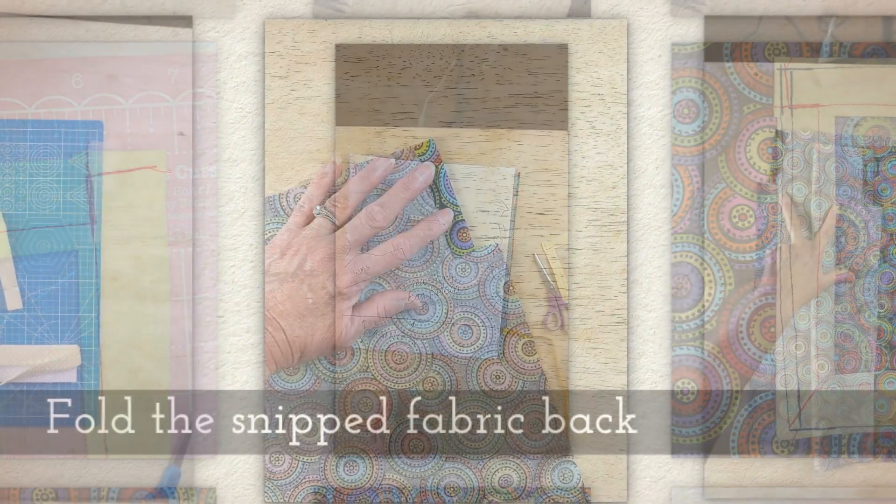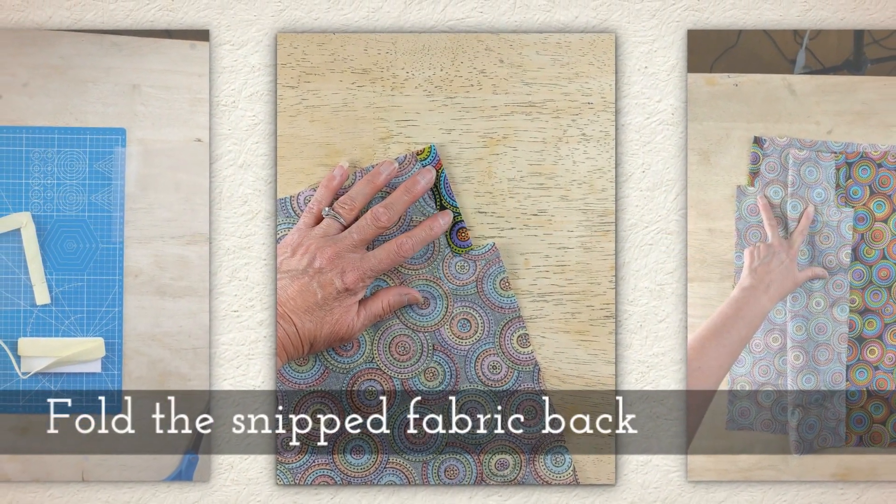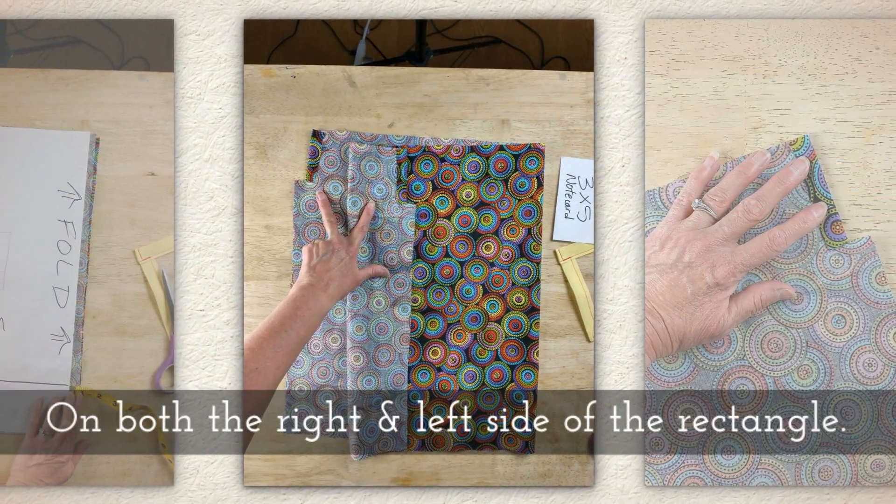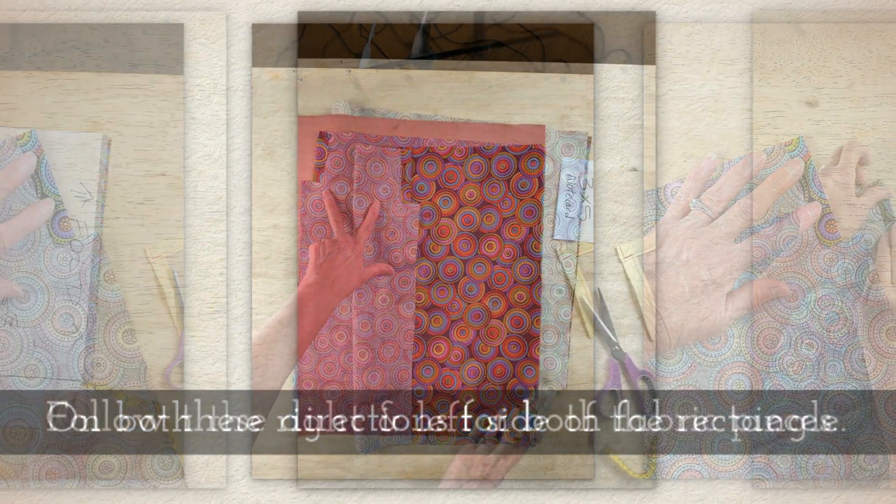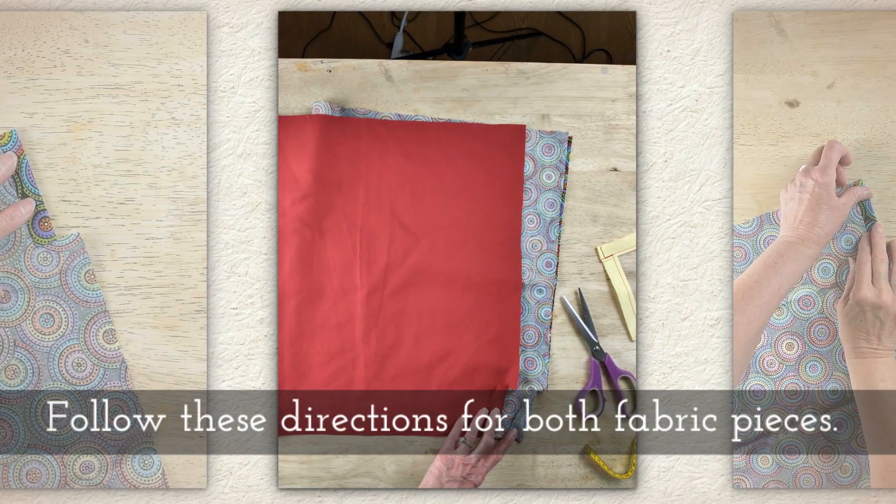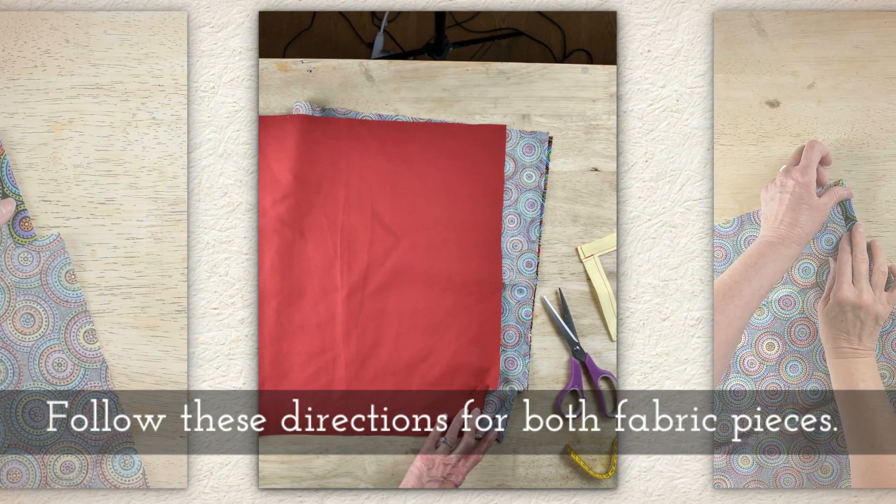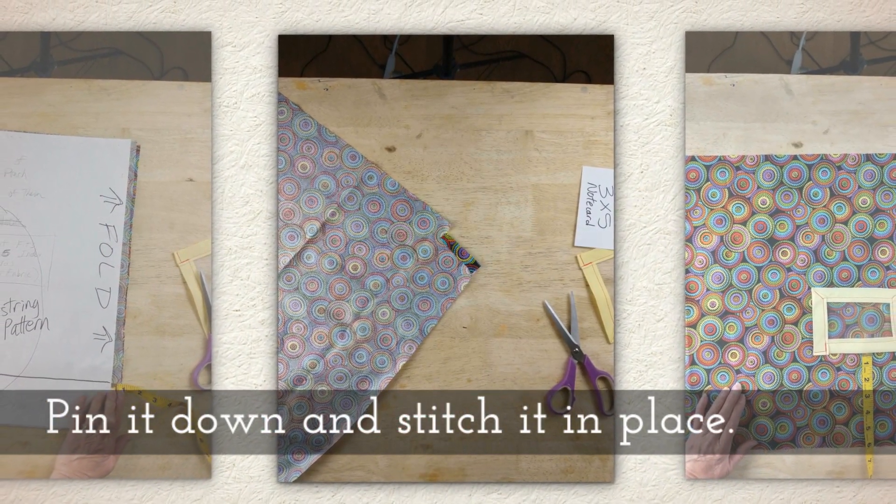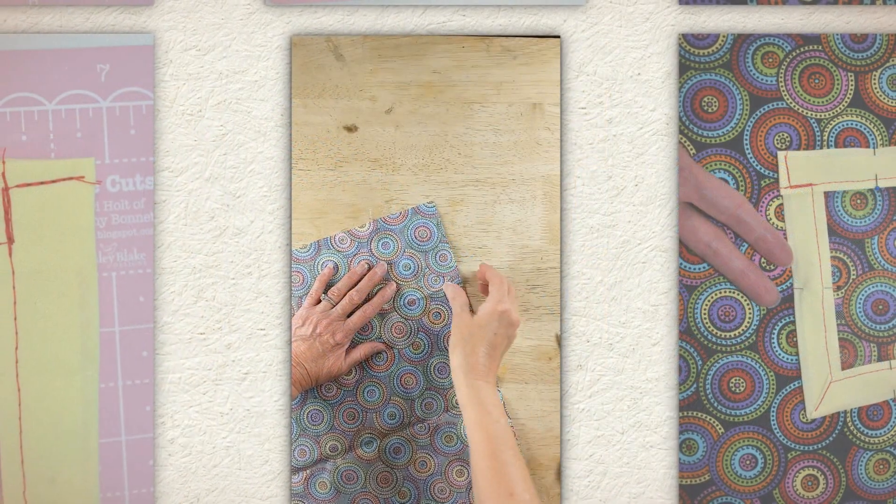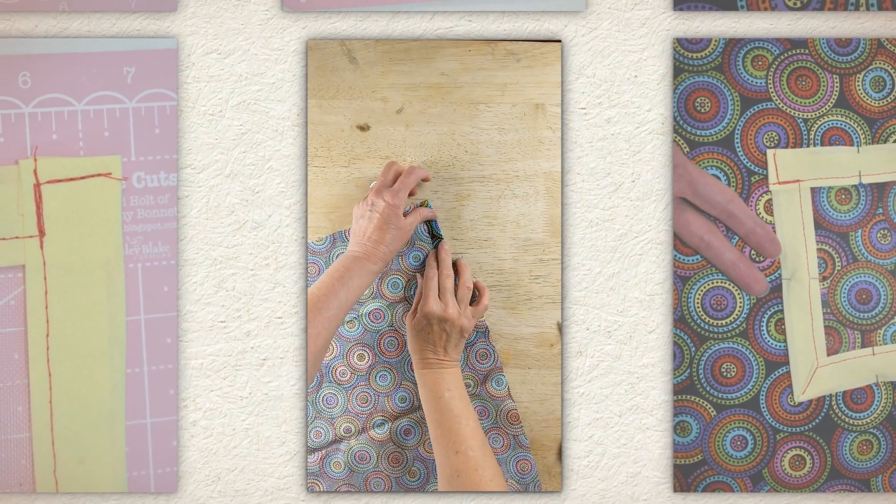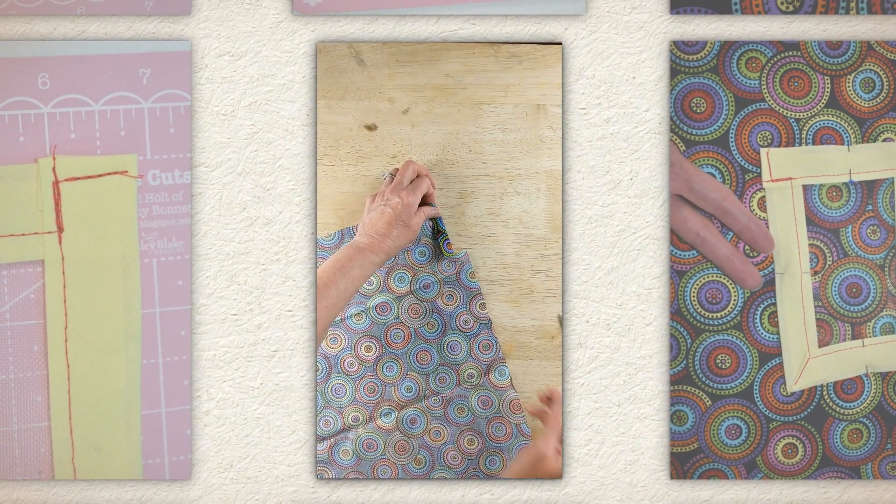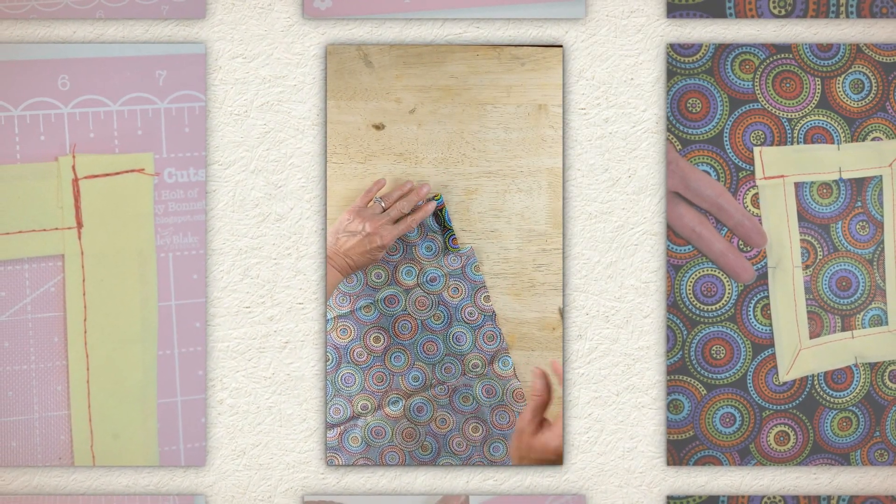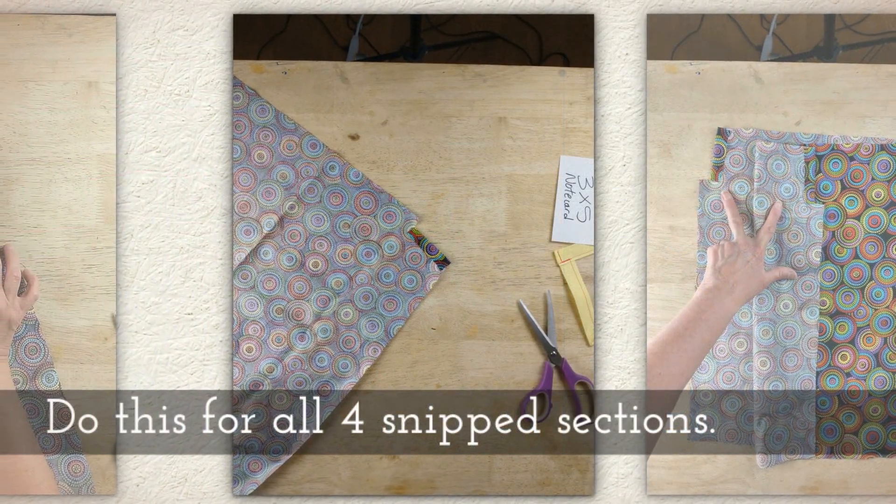Fold the snipped fabric back on both the right and the left side of your rectangle of fabric. And then follow these directions for both of your pieces of fabric. You're going to pin this snipped part down and stitch it in place. Then I go to my sewing machine and I just run a quick stitch across that.